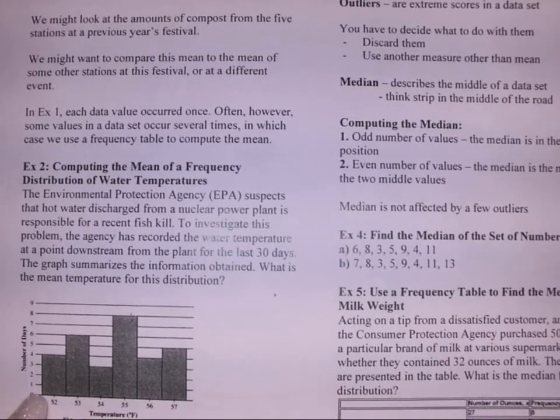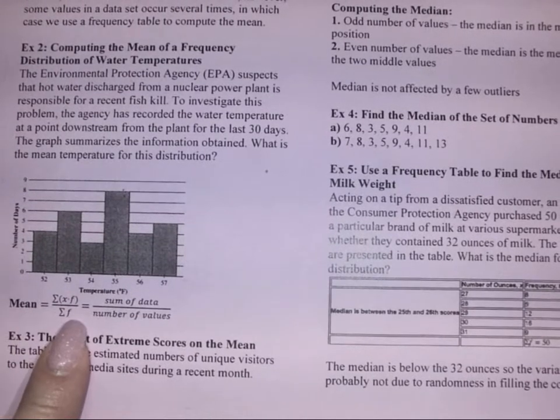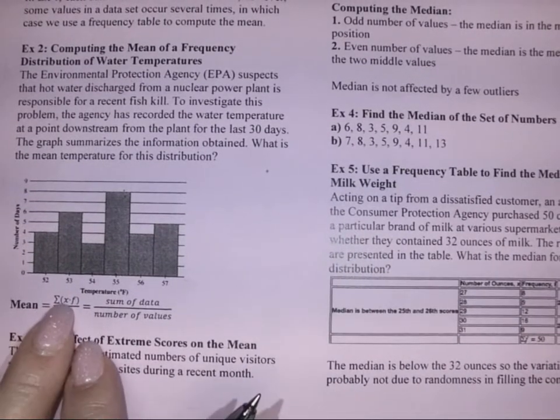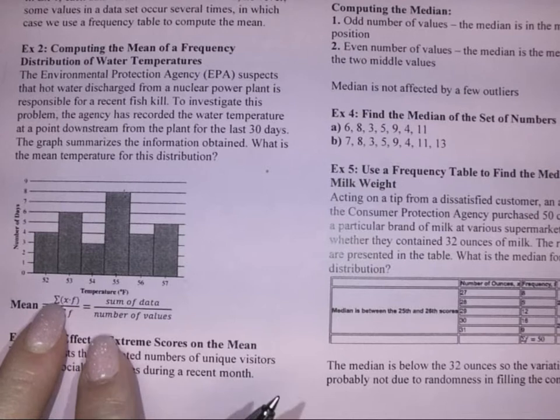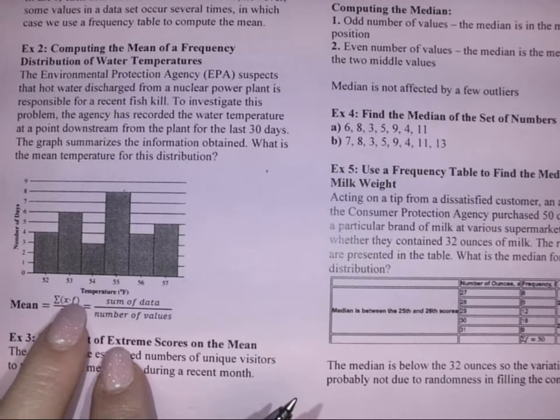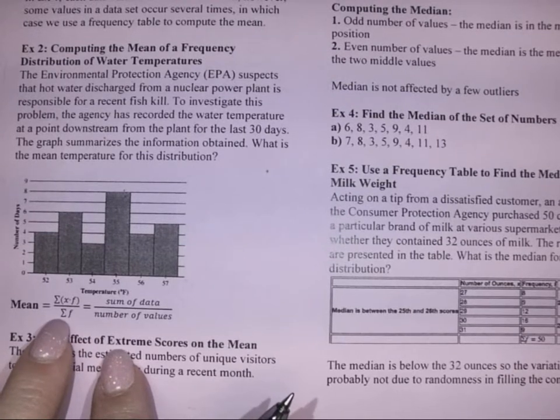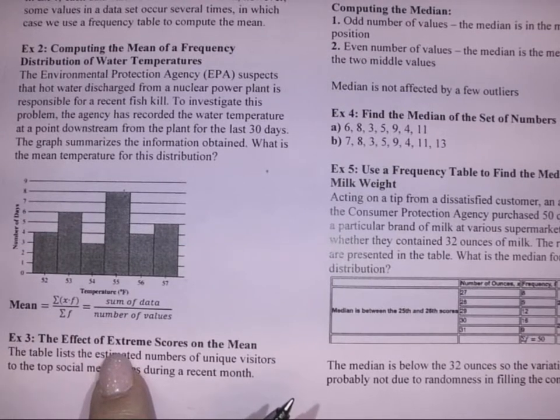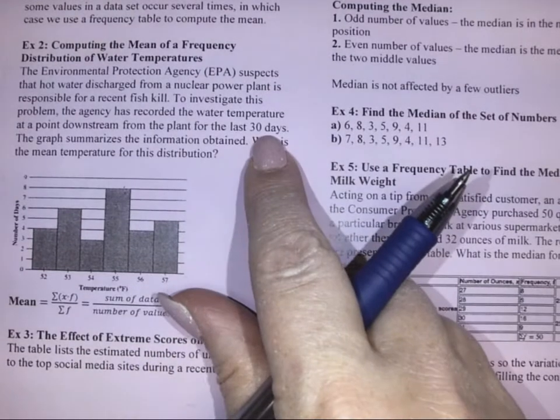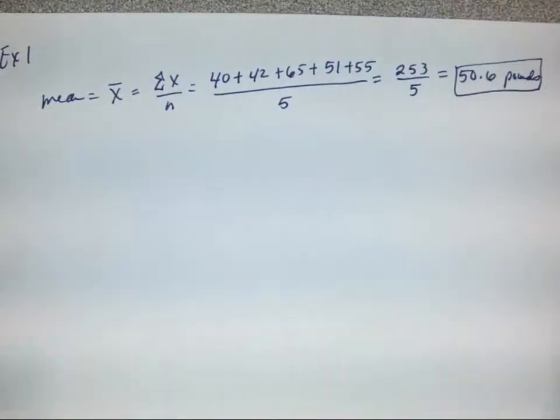Here we've got our graph, and this will be the formula that we use for frequencies. This time we still do the summation where we add them, but we're going to multiply each value times however many times they occur, and then we'll divide by that summation of frequencies. We know that it's going to be 30 total points because they did it for 30 days.